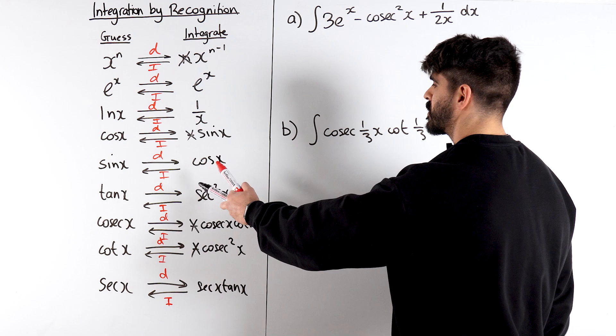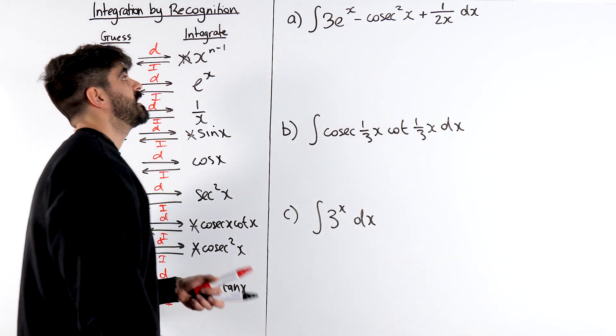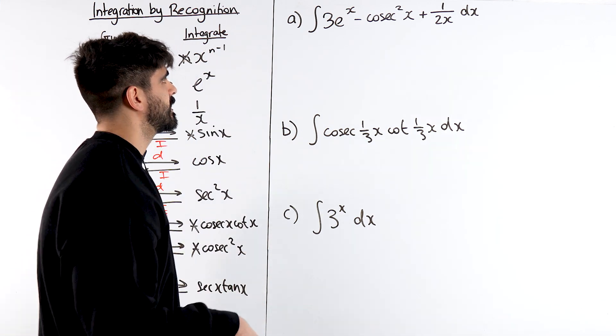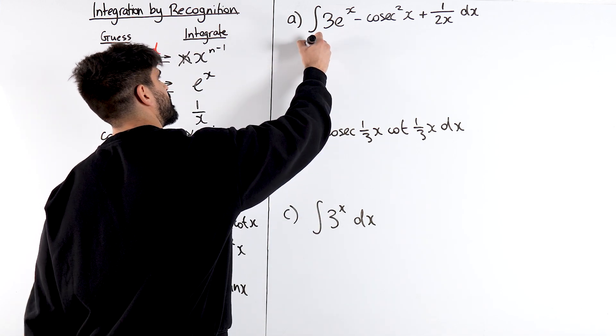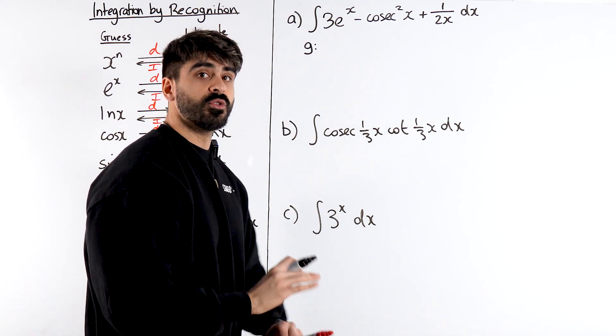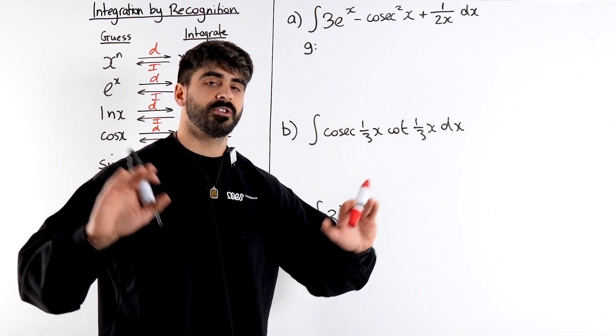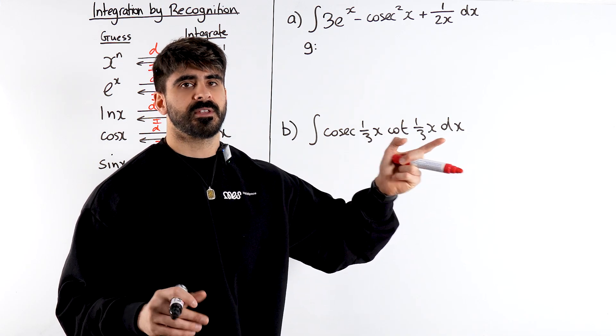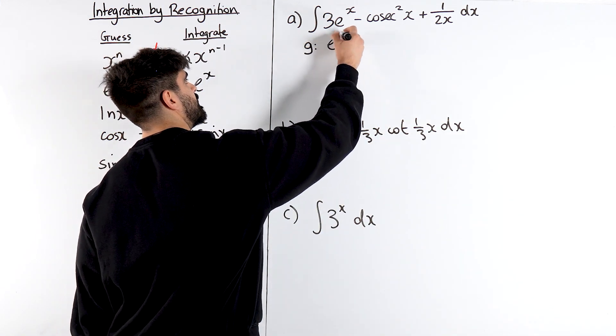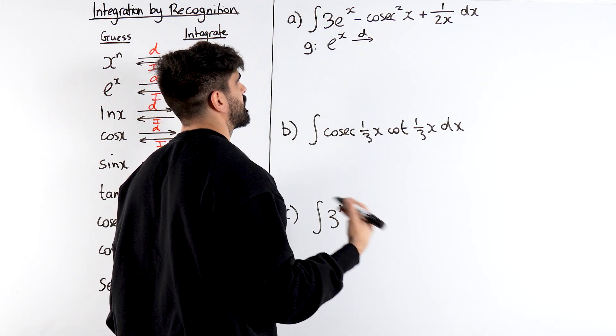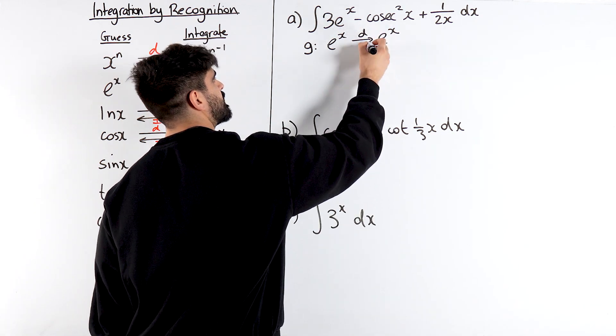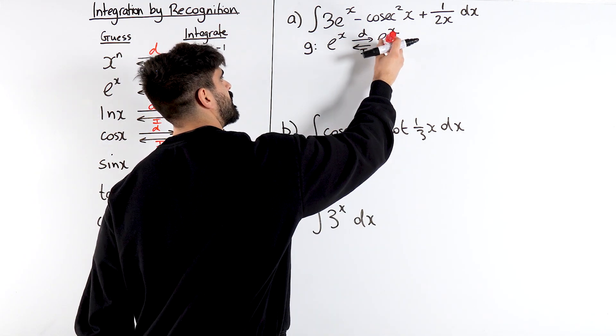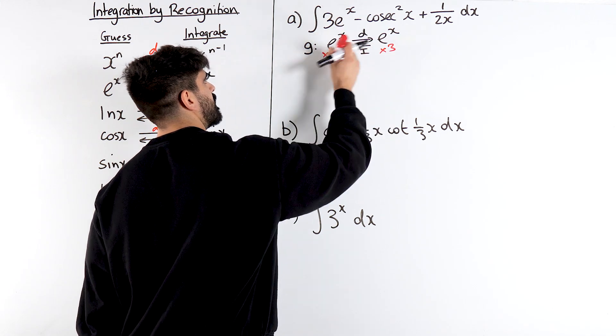Let's use this concept to integrate stuff like this. Integrate 3e to the power of x minus cosec squared x plus 1 over 2x. We're going to make guesses. What is my guess for the first thing? Ignore the 3. I want to integrate an exponential. I know that they integrate and differentiate to the same thing so my guess is that it's going to be e to the x. Then we differentiate that to check. E to the x differentiates to e to the x which means e to the x integrates back to the same thing. But we wanted 3e to the x. So we multiply both sides by 3 and there's our answer 3e to the x.